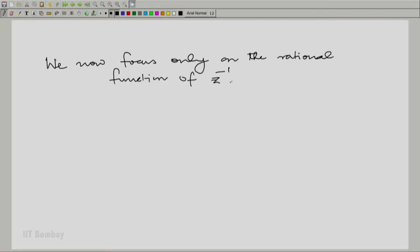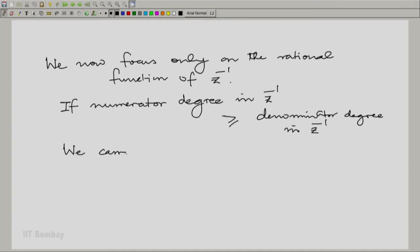Now, the first step is to check the numerator degree and denominator degree. If the numerator degree is greater than or equal to the denominator degree in Z inverse, we first carry out a long division.